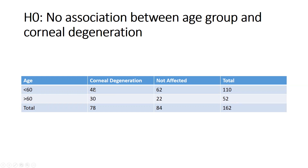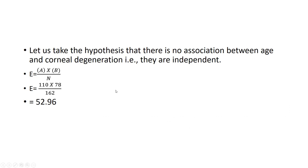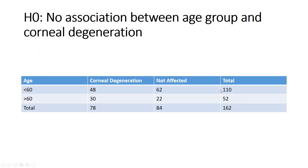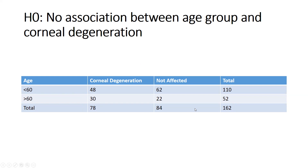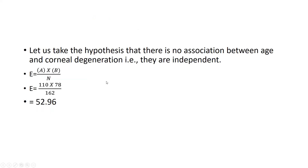Assuming no association (independence), we calculate the expected frequencies using the formula: (row total × column total) / N. For the less-than-60 with corneal degeneration cell: 110 × 78 / 162 = 52.96. For the less-than-60 not affected cell: 110 × 84 / 162 = 57.04.